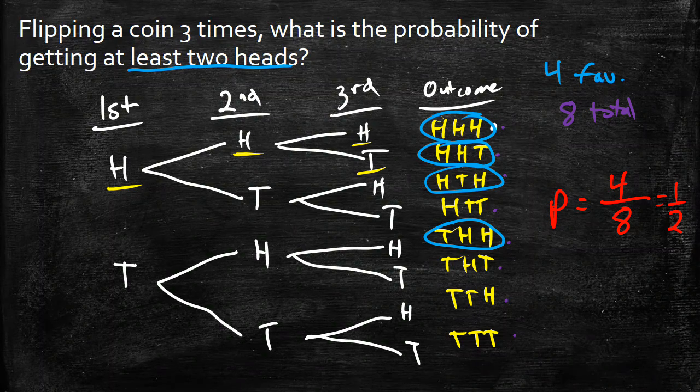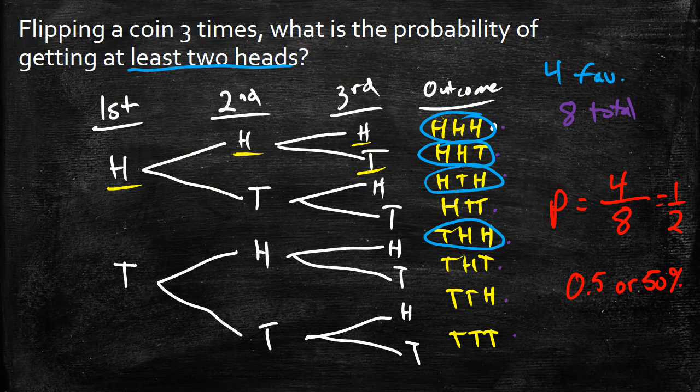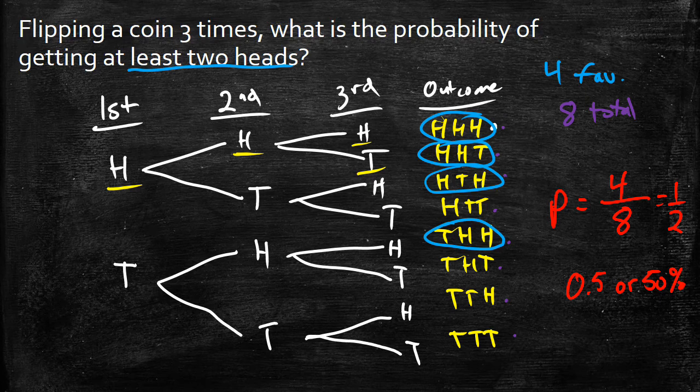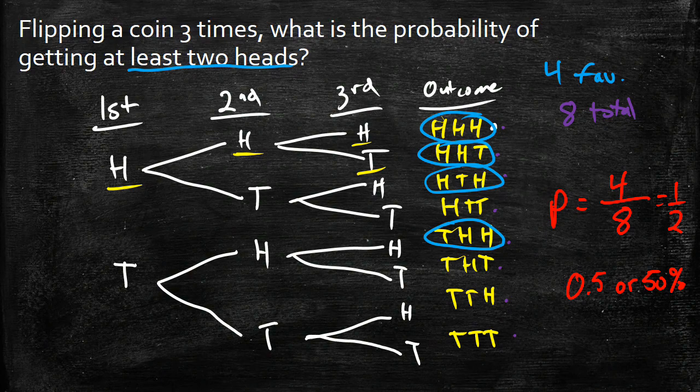And there we have it. It looks like if you're going to flip a coin three times, the probability, the likelihood of getting at least two heads is 50%. That's a pretty good chance.